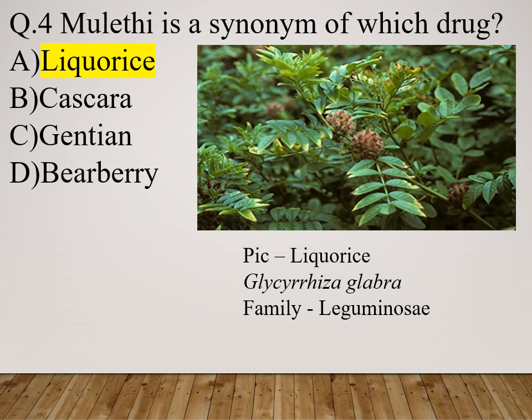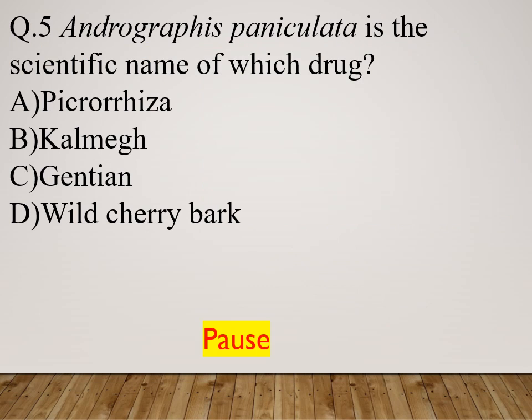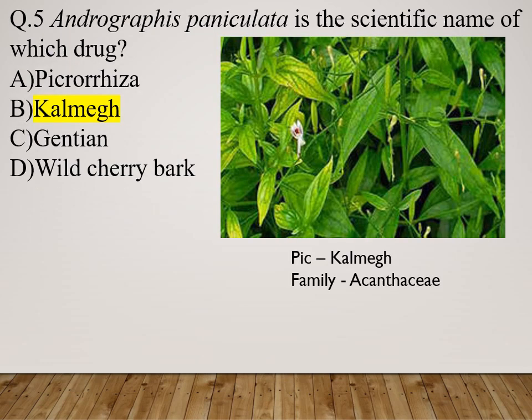Question 5: Andrographis paniculata is the scientific name of which drug? Option A: Picoriza. Option B: Kalmegh. Option C: Gentian. Option D: Wild cherry bark. The right answer is Kalmegh. Kalmegh's family is Acanthaceae.